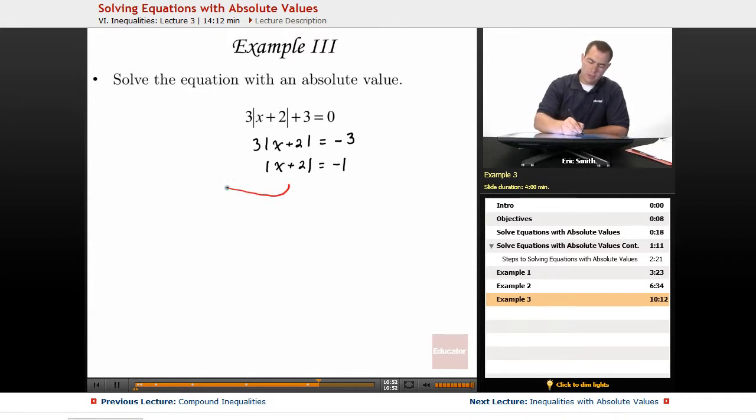So I have the absolute value of x plus 2. Now following our steps, we would split this into two problems. Here we have the problem exactly the same, just no absolute value bars. And over here, negative x plus 2 is equal to negative 1.